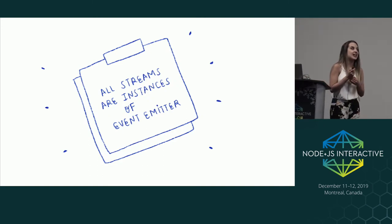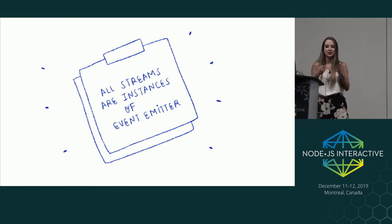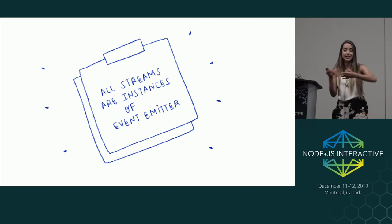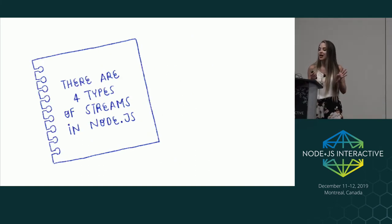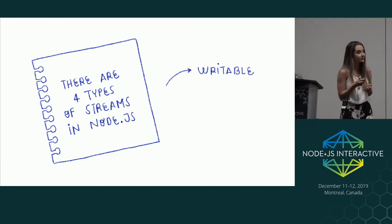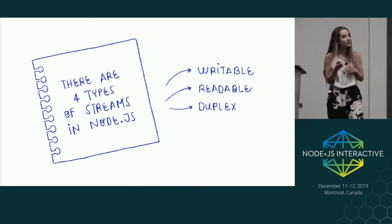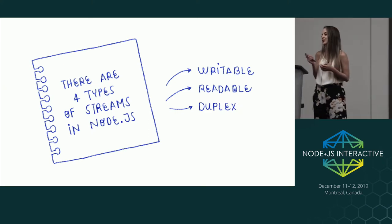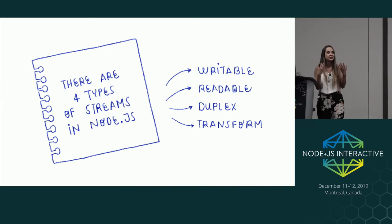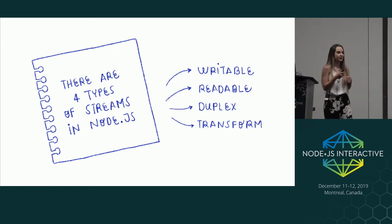The stream module is a native module shipped by default in Node.js, and all streams are instances of the EventEmitter class — meaning streams are inherently event-based. They emit events that can be used to read or write data. There are four types of streams in Node.js: writable, used to write data sequentially; readable, used to read data sequentially; duplex, used for both reading and writing; and transform, where data can be modified when written or read — for example, compression of files, where we can write compressed files and read the compressed data using a stream.